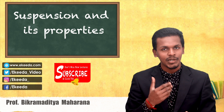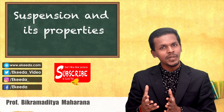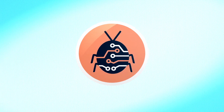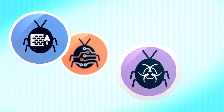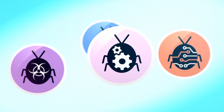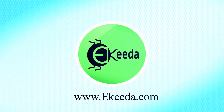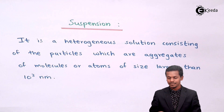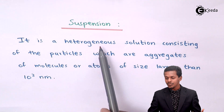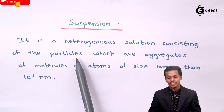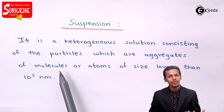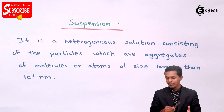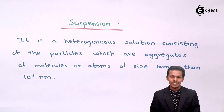So what is suspension and what are its properties? Suspension is a heterogeneous solution consisting of particles which are aggregates of molecules or atoms. It is somewhat similar to a colloid, but it depends on the size of the particles as well.